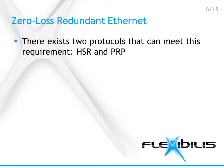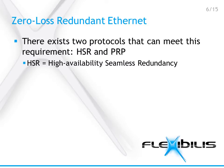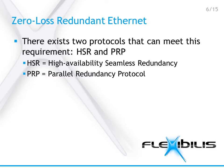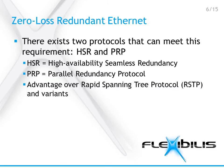There exist two protocols that can meet the requirement for zero-loss redundancy: HSR and PRP. HSR means High Availability Seamless Redundancy, and PRP is Parallel Redundancy Protocol. The difference between these two is that HSR has double data and PRP doubles everything. The advantage over Rapid Spanning Tree Protocol, RSTP for short, is that HSR and PRP have zero-time recovery in case of failure.